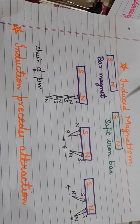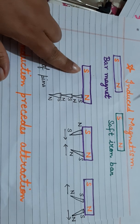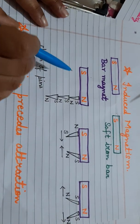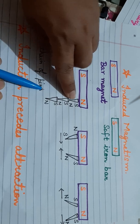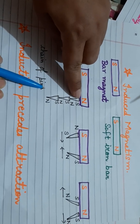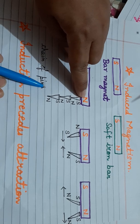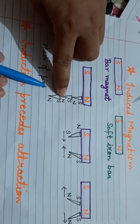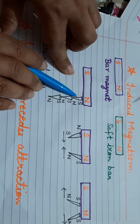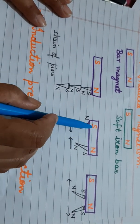I have drawn diagrams to explain induced magnetism further. In the first case, I have a bar magnet with south and north polarity and a chain of pins. The near end of the first pin becomes the south pole because it is magnetized by the north pole of the magnet, and the far end becomes north. The second pin similarly becomes south at the near end and north at the far end, forming a chain.